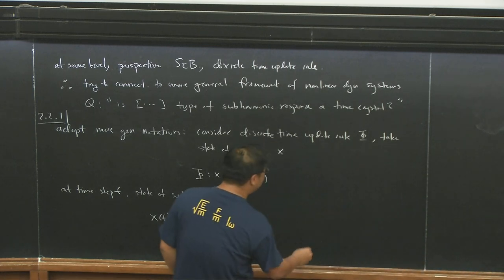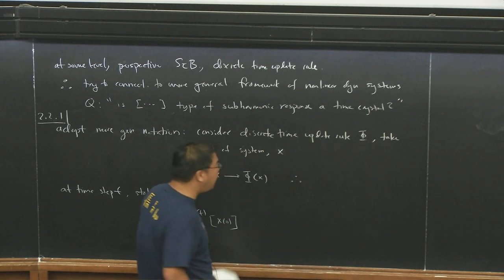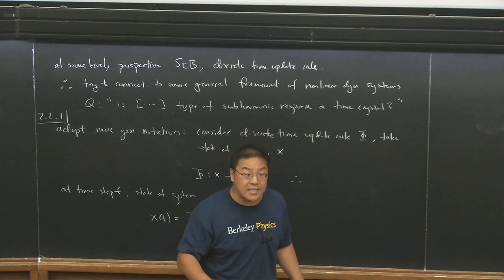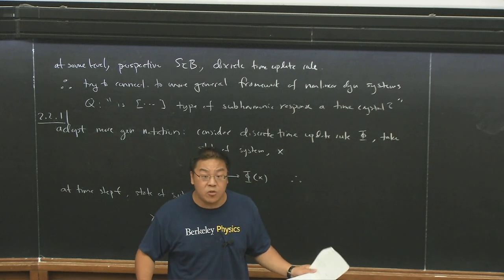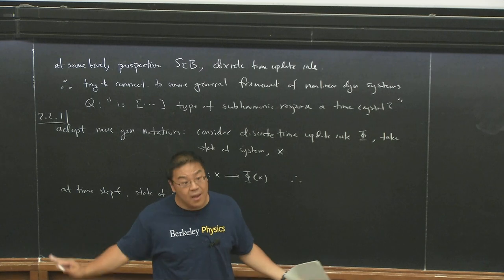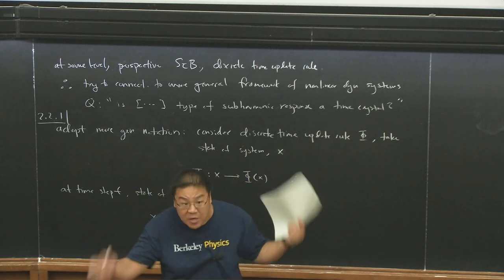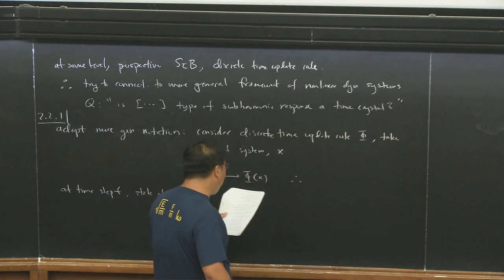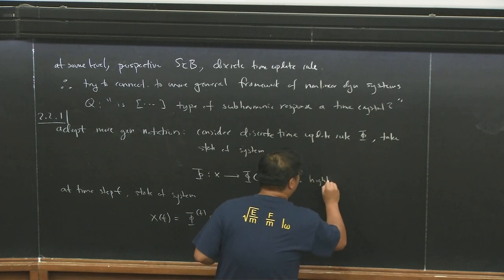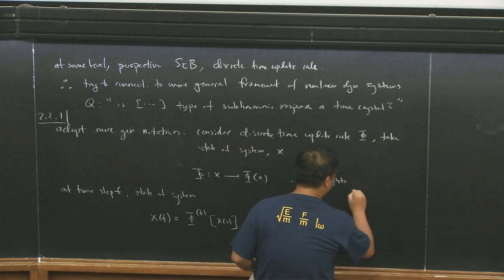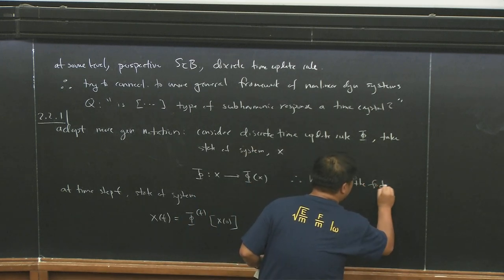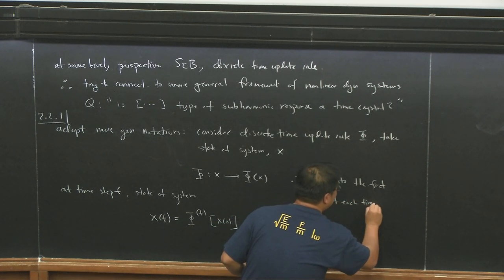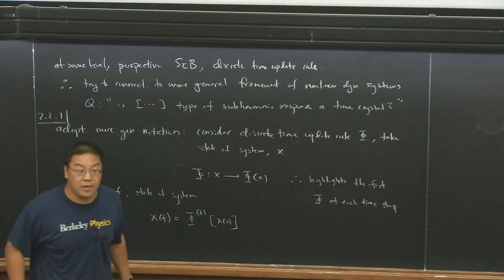The reason why this notation is helpful is that it really emphasizes that from the perspective of time crystals or time translation symmetry breaking, I don't need any other symmetry of the system — no spatial translation symmetry, no spin rotation symmetry, no phase transformation symmetry. This discrete time update rule highlights that the only thing that exists is that you apply φ at each time step. You don't need any other property of the system.